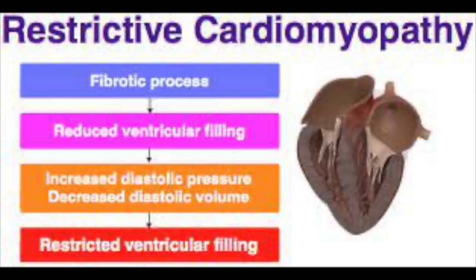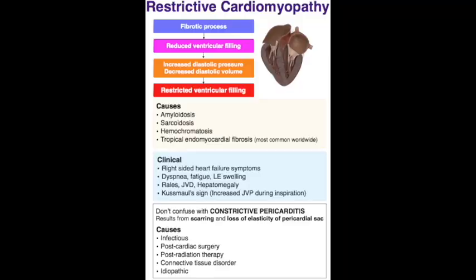Clinical manifestations: right-sided failure predominates over left-sided failure. Right-sided symptoms include hepatosplenomegaly, JVD, hepatojugular reflux, peripheral edema, and ascites. GI symptoms occur because ascites pushes on the stomach, causing early satiety, inability to hold food, nausea and vomiting. Left-sided failure symptoms include dyspnea (most common complaint) and fatigue.